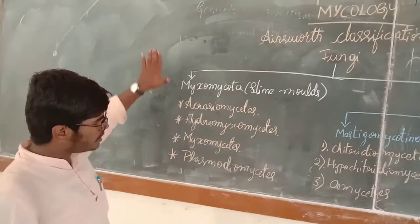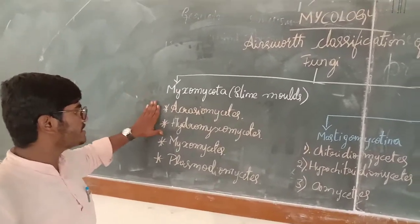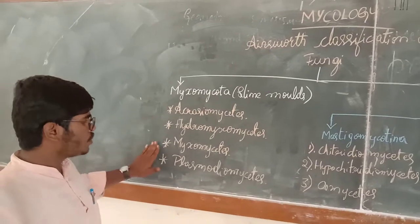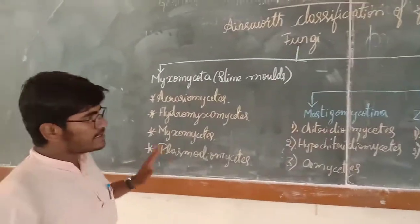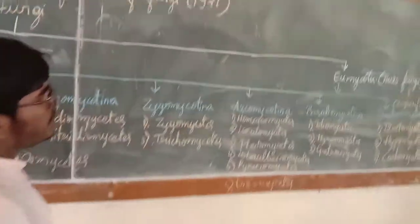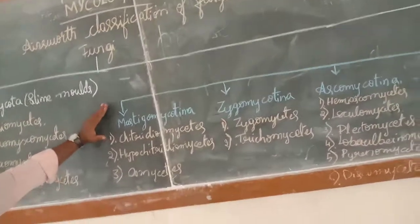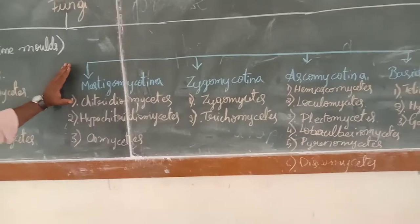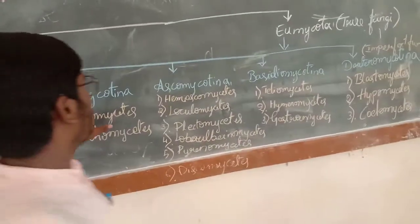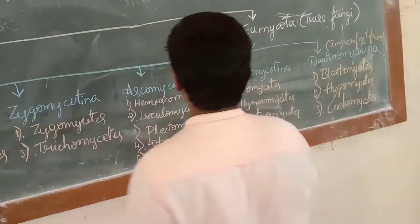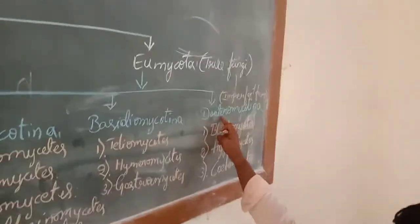Myxomycota doesn't have much complexity, so it is directly classified into subclasses: Acrassiomycetes, Hydromycetes, Myxomycetes, and Plasmodiomycetes. Since Eumycota is much more complex, it is divided into five subdivisions: Mastigomycotina, Zygomycotina, Ascomycotina, Basidiomycotina, and Deuteromycotina.